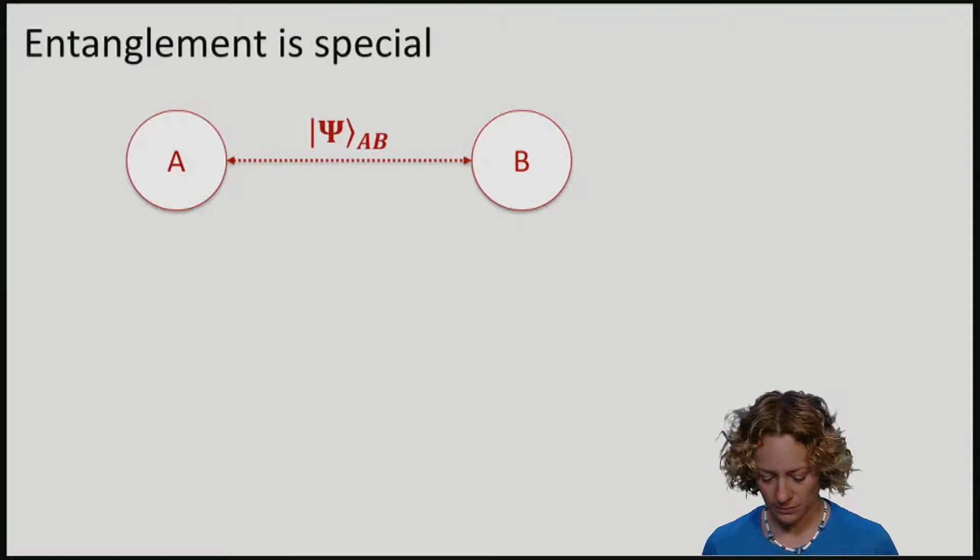To do this, it is useful to know what it means mathematically for a quantum state to be entangled. But before I give you a definition, let's start with an example of two qubits A and B. There is a state that you've already seen, the EPR pair, which looks like this.